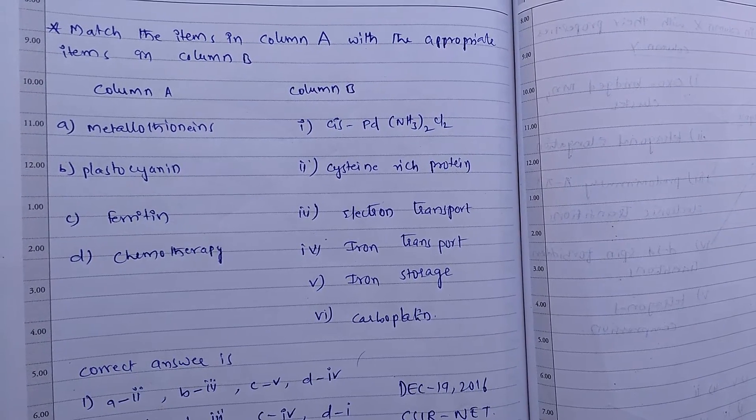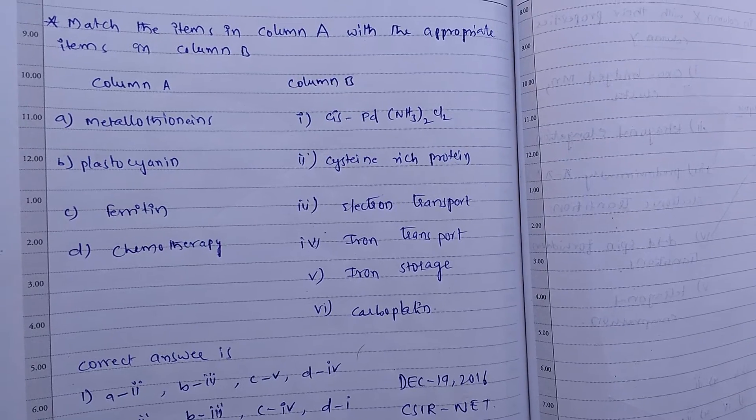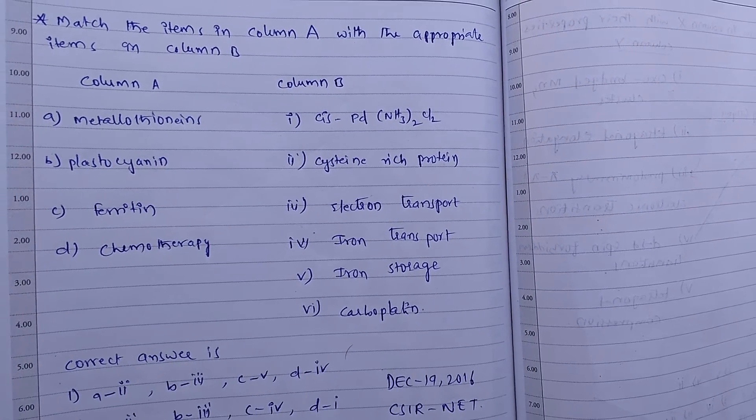Column A: A. Metallothionine, B. Plastocyanine, C. Ferritin, D. Chemotherapy. Column B: